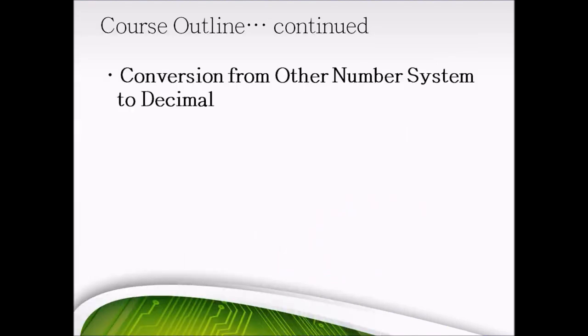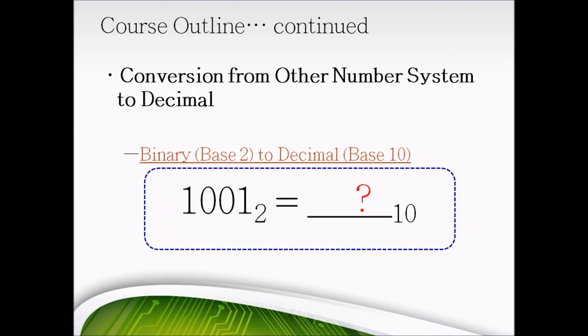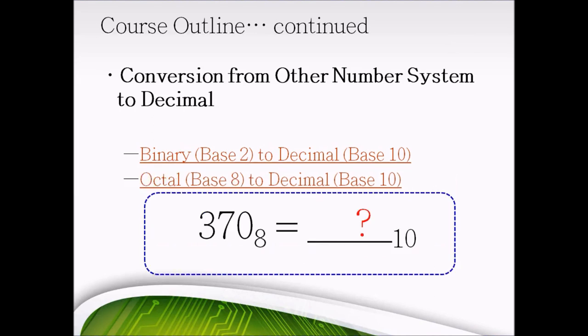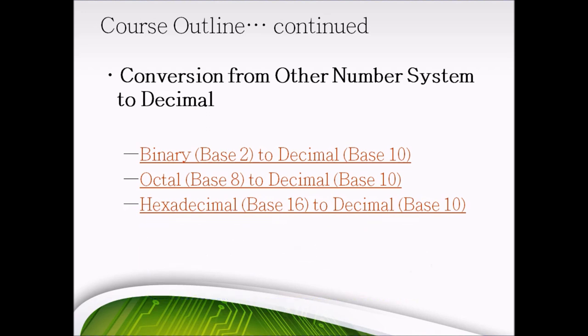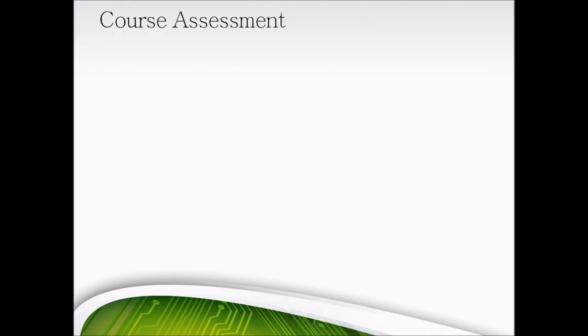Then we have conversion from other number systems back to decimal, which are conversion from binary to decimal, from octal to decimal, from hexadecimal to decimal, and another quick conversion example from other number systems back to decimal.